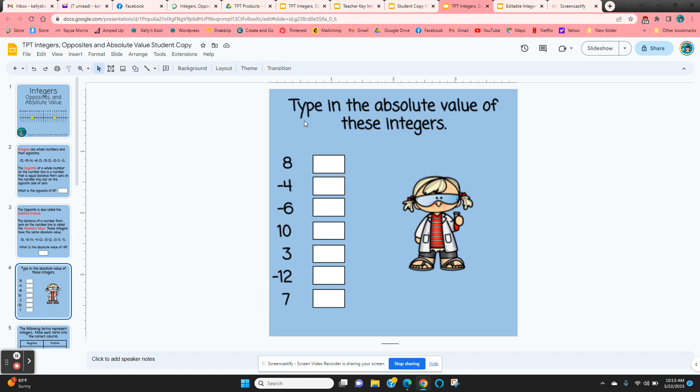Then they're given a slide where they're given seven integers and they just have to type in the absolute value of each one.